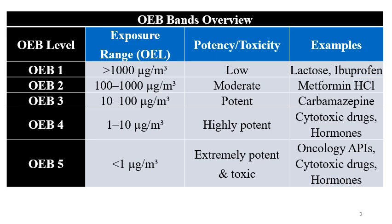In OEB3, the potency and toxicity are increasing as the band number increases. OEB3 has an OEL range of 10 to 100 micrograms per cubic meter and includes potent compounds like carbamazepine. OEB4 has an OEL range of 1 to 10 micrograms per cubic meter and is highly potent. Many cytotoxic drugs, anti-cancer drugs, and hormonal drugs fall into OEB4.